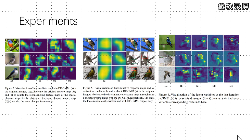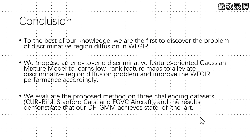In this paper, we first discover the discriminative region diffusion (DRD) problem of high-level feature maps in WFGIR methods. We argue that the DRD problem aggravates the difficulty of discriminative region localization for existing methods. We propose an end-to-end discriminative feature-oriented Gaussian mixture model method to learn low-rank feature maps to address the DRD problem.